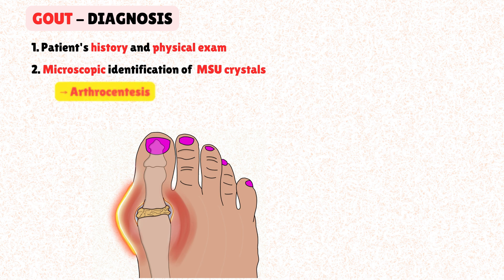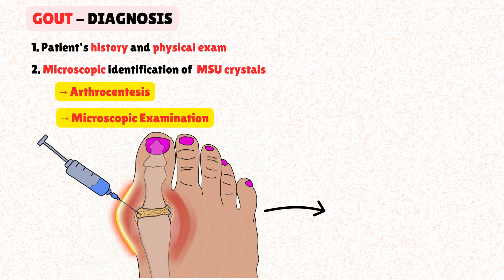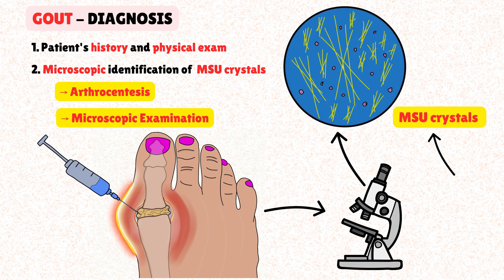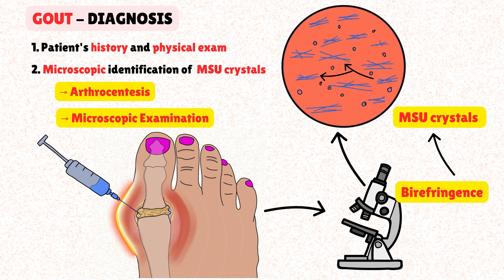The procedure starts with arthrocentesis — essentially the aspiration of synovial fluid from the inflamed joint. This is a crucial step not only for diagnosis, but also to rule out septic arthritis, which can mimic gout and is a medical emergency. The fluid is then analyzed under a polarized light microscope. MSU crystals are needle-shaped and exhibit strong negative birefringence — meaning they appear yellow when aligned parallel to the compensator axis and blue when perpendicular. The presence of these crystals, especially within neutrophils, is a definitive diagnosis of gout.